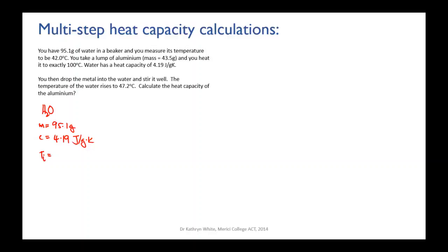We know that the initial temperature of the water is 42.0 degrees Celsius, and we know the final temperature of the water once the aluminum has been put into it and we've stirred it until all the heat has been transferred - the final temperature is 47.2 degrees Celsius. From those last two values we can work out ΔT, the change in temperature. That's just gonna be 47.2 minus 42.0 which is 5.2 degrees Celsius. So that's what we know about the water.